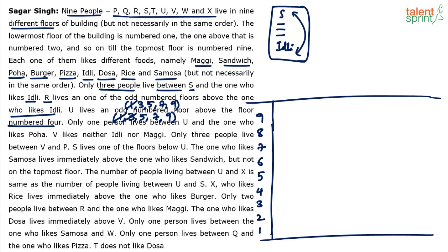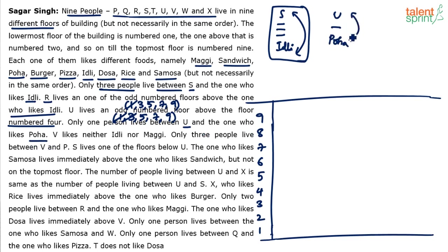Only one person lives between U and the one who likes poha. Pictorially: U — poha, with only one person between them. Their positions can be interchanged of course.